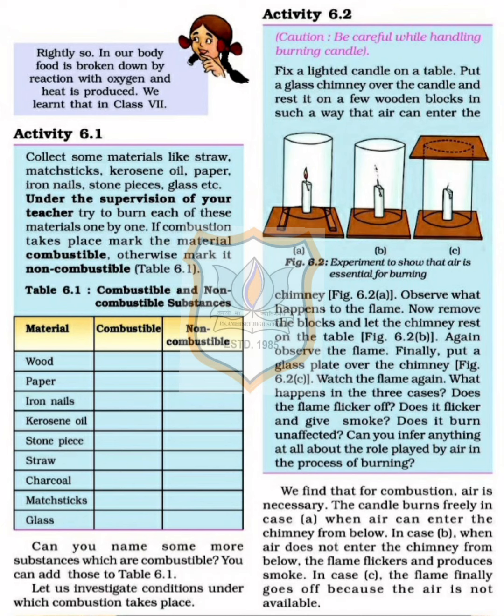As shown in the figure, in setup C a candle is inside a chimney closed from below and above. In setup B, the chimney is closed from below but open from the top. In setup A, the chimney is resting on blocks so air can enter from below and exit from the top — that is how we have arranged our three setups.